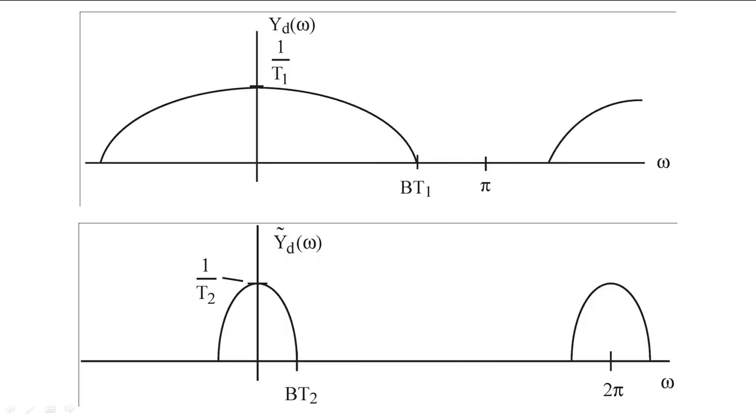Third, if we interpolate our signal to a new period T2, then we want the new DTFT to be bandlimited to B times T2 and be scaled by the new period.